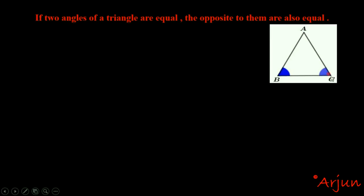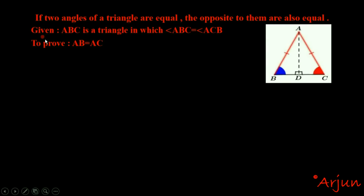We are given triangle ABC, in which angle ABC is equal to angle ACB. We need to prove that AB is equal to AC. Note that C is opposite AB, and B is opposite AC.